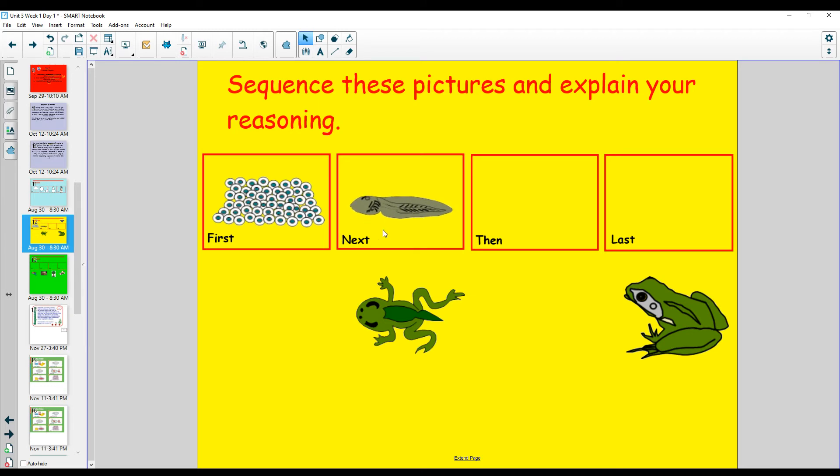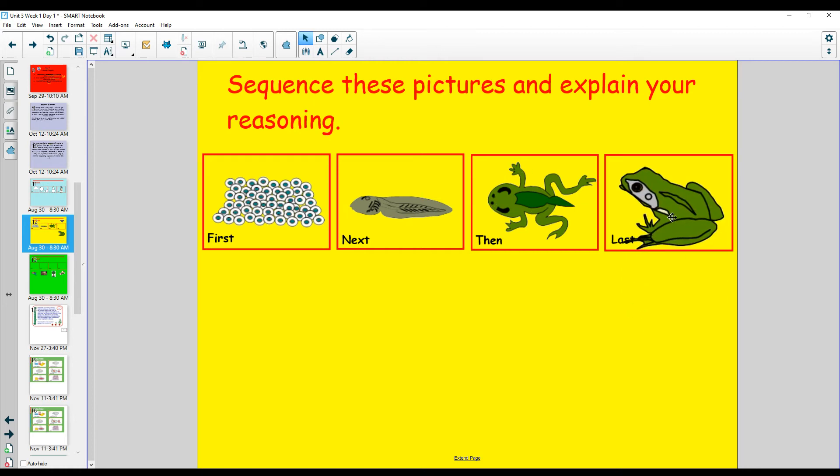As the tadpole grows and is growing its lungs, it starts to lose its tail, starts to develop its lungs, and lastly, it turns into an adult frog who can breathe out of water.